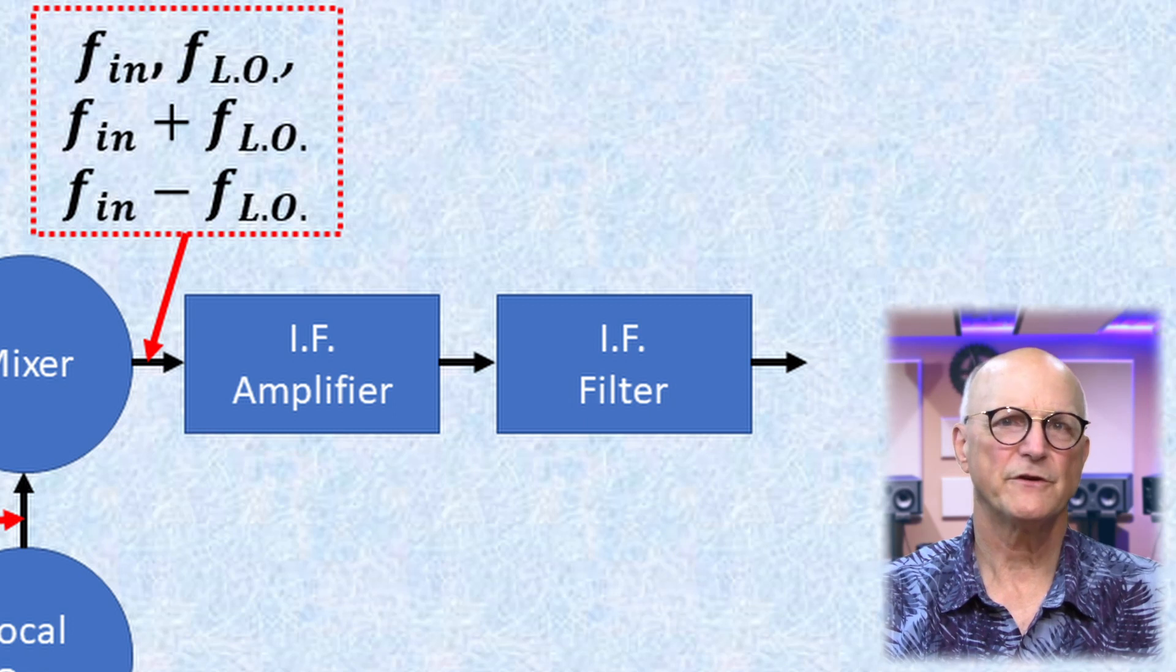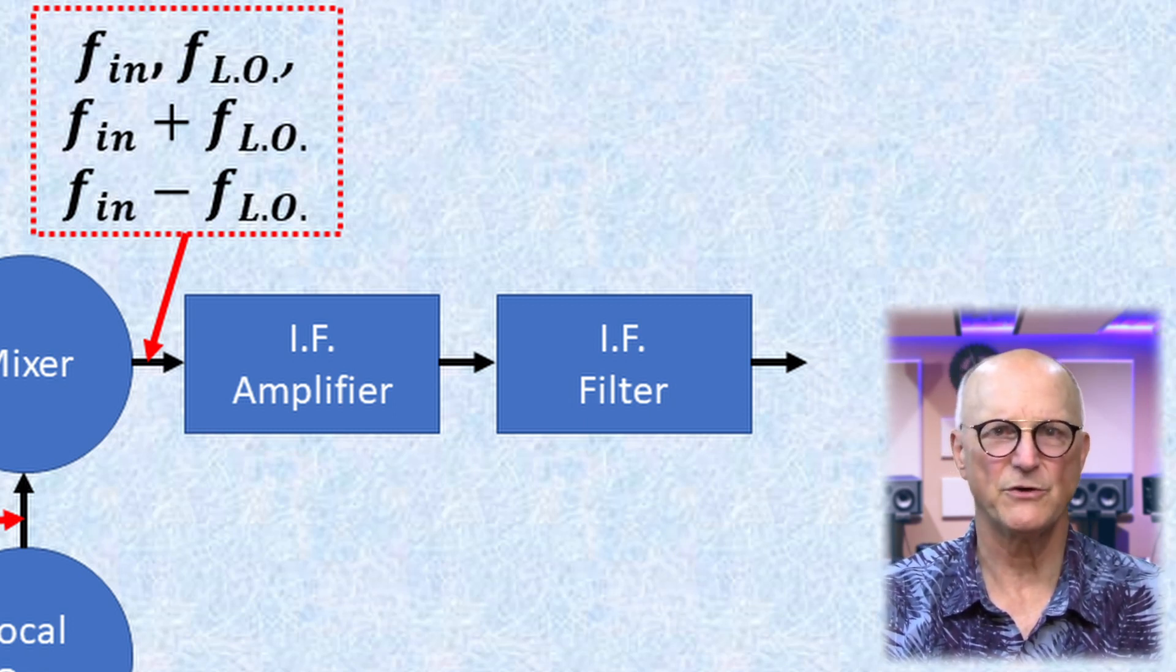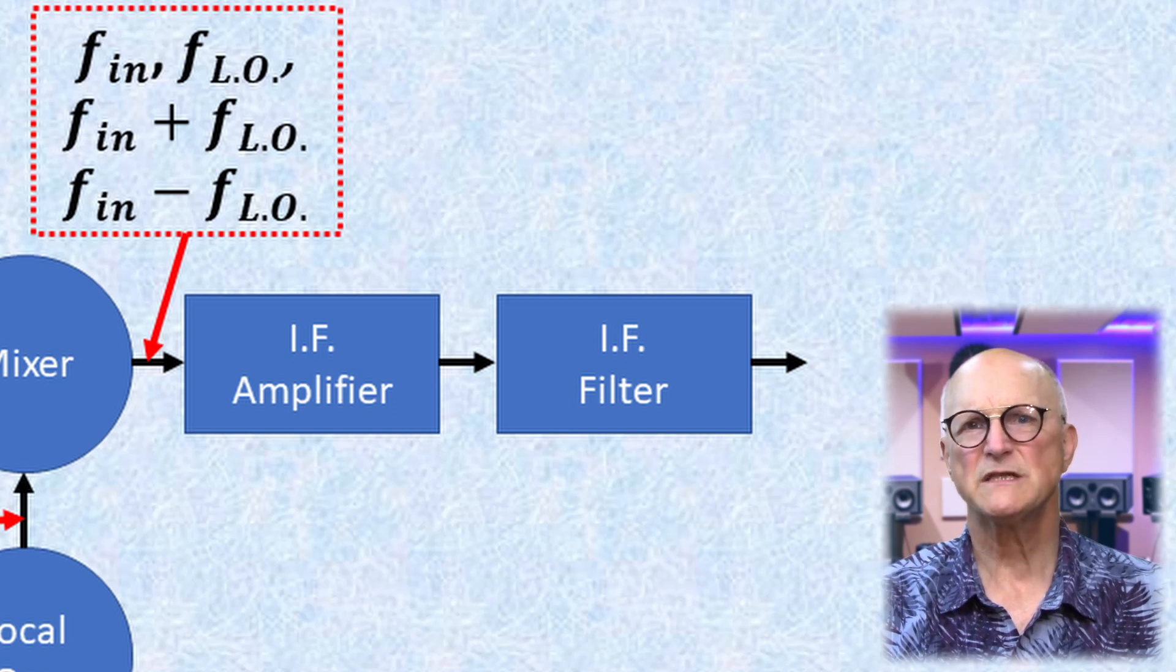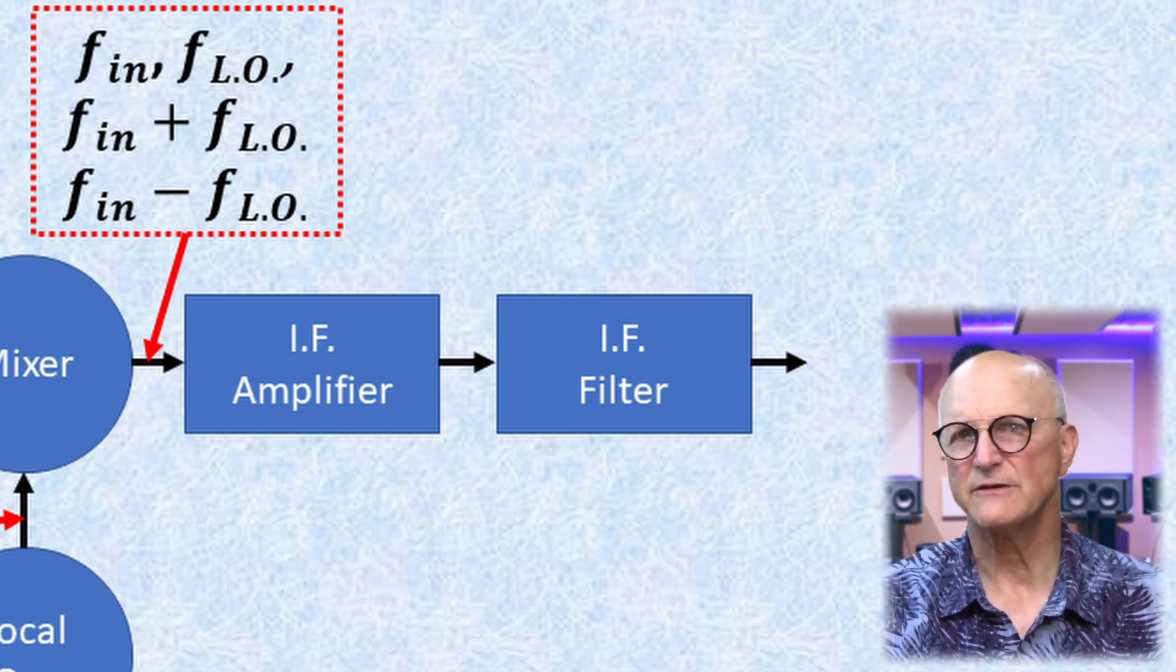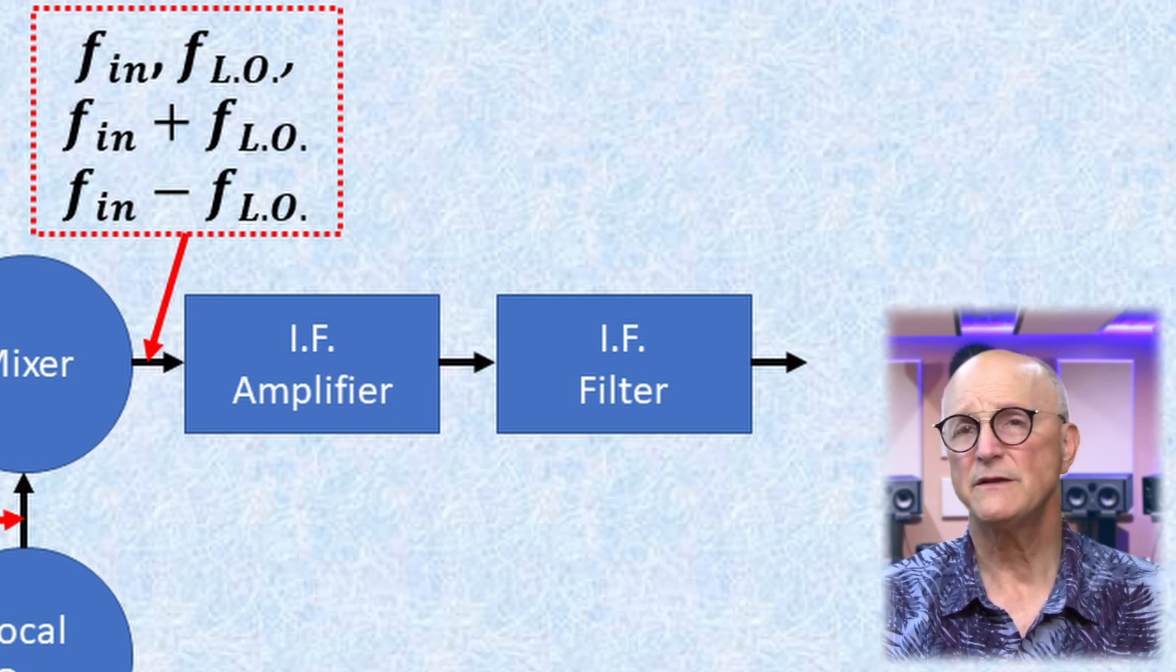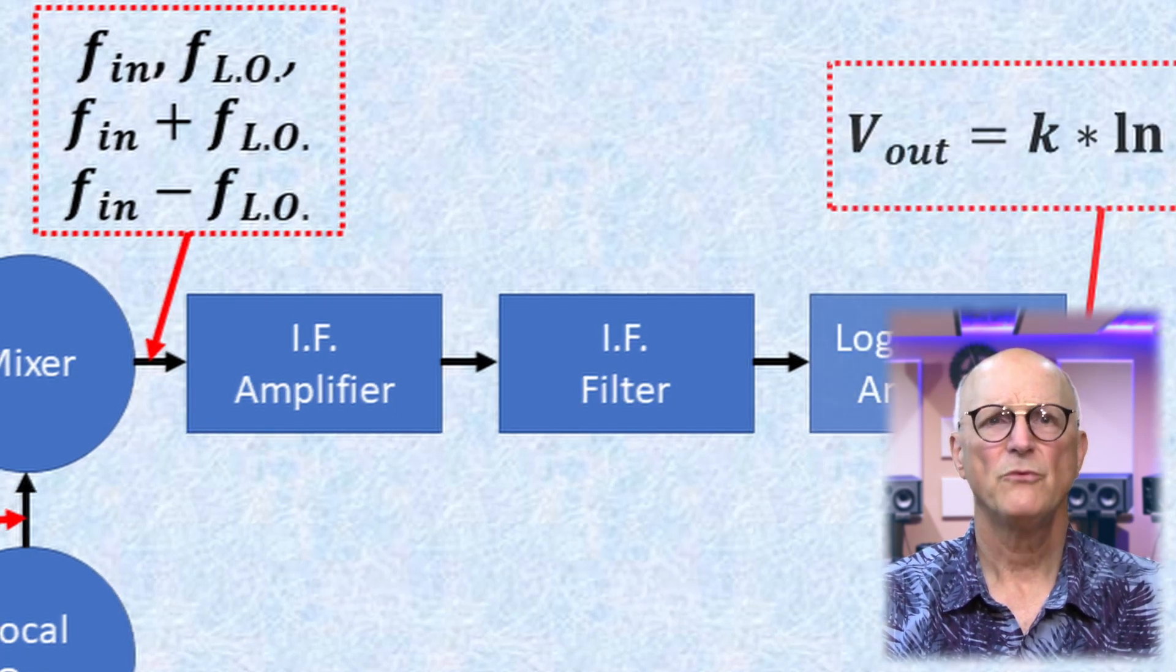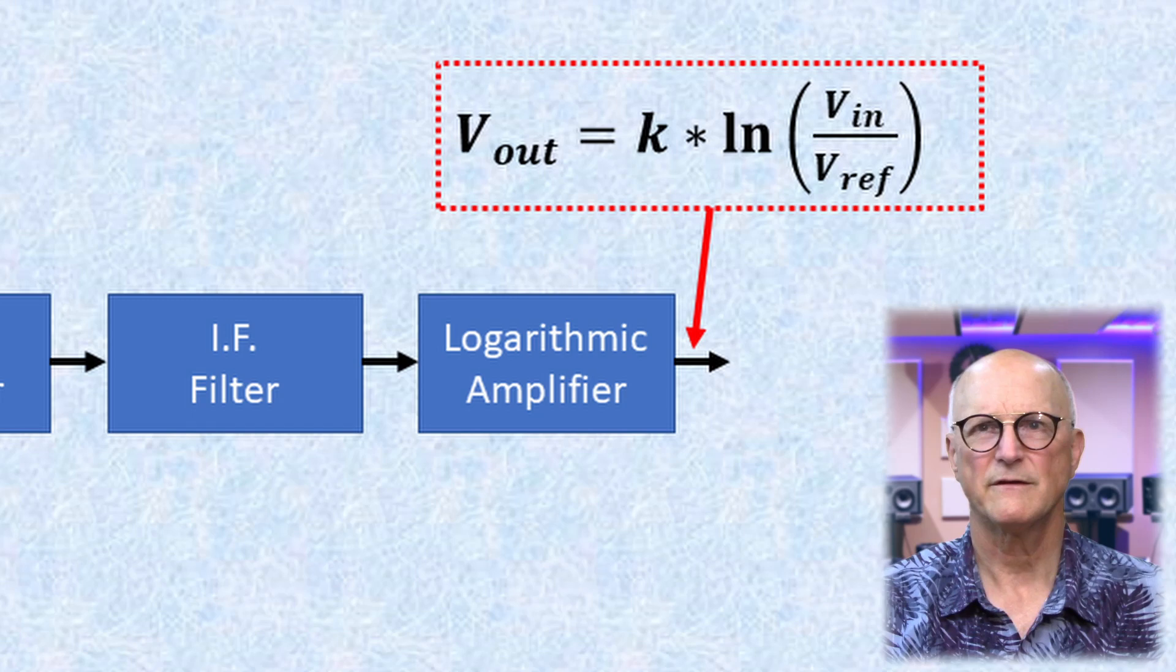After this, we diverge from the design of a normal radio receiver that we might be listening to. We want to be able to display very small signals to relatively large signals spanning as much as 100 dB on our screen. In order to accommodate this large dynamic range, we follow the IF filter with a logarithmic amplifier. And you go, well, what is a logarithmic amplifier?